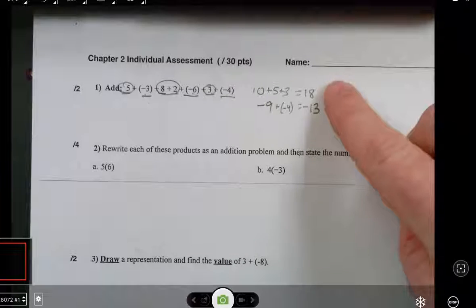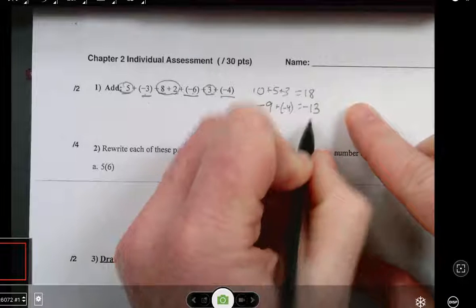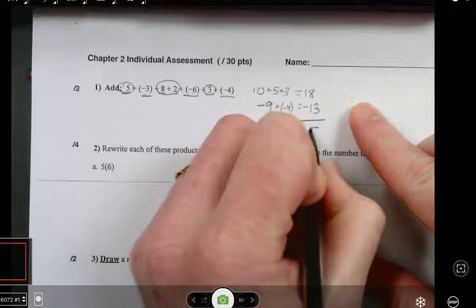So now I have 18 positives and 13 negatives. So what does that add to? A positive 5.